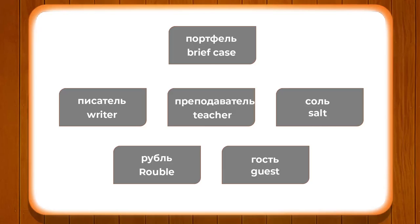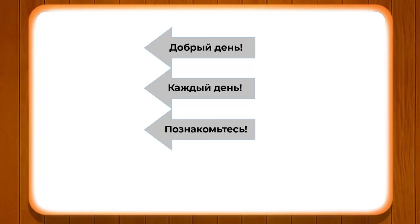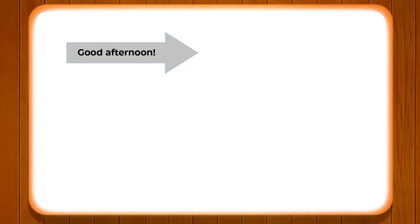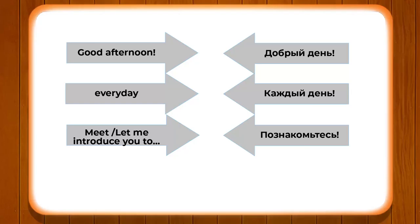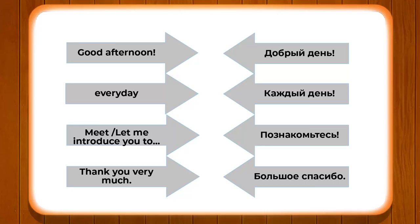Now let's look at a few expressions. It is very important in Russian to communicate properly so that whenever you are greeting or talking to a Russian, they understand you. We have expressions like: DOBRY DEN meaning good afternoon or good day, KAZHDIY DEN meaning every day, POZNAKOMTES meaning let me introduce you — DAVAY POZNAKOMTES. And when you say thank you very much, you say BOLSHOE SPASIBO.